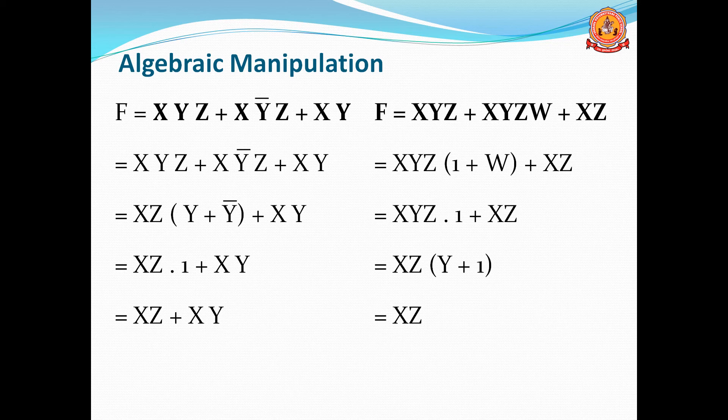Since 1 + w equals 1 by the properties of 0 and 1 (any variable plus 1 is 1), we get xyz·1 + xz, which equals xyz + xz. Taking xz outside from both terms gives xz(y + 1).